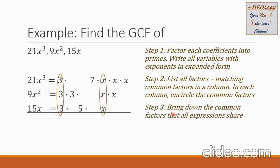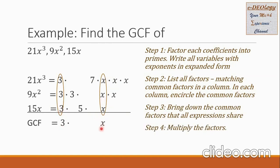Step 3: bring down the common factors that all expressions share. So the 3 is brought down, and also the x. Then in step 4, we multiply the factors. So the greatest common factor equals 3x.